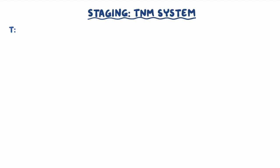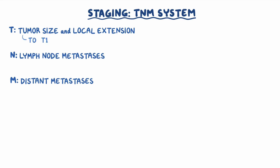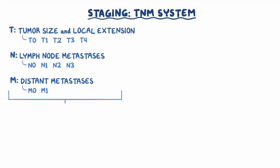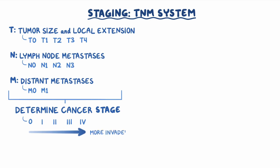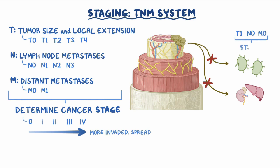Following imaging studies, esophageal cancer is staged according to the TNM system, where T means tumor size and local extension, N stands for lymph node metastases, and M stands for distant metastases. Each category has substages: T0 to T4, N0 to N3, and M0 to M1. The combinations of these substages determine the esophageal cancer stage, from 0 to 4, with higher numbers indicating more invasion and spread. For example, a tumor that has invaded the esophageal submucosa but hasn't spread to lymph nodes or distant organs is categorized as T1, N0, M0 — stage 1. But if there are any distant metastases (M1), the tumor is considered stage 4, regardless of T and N status.